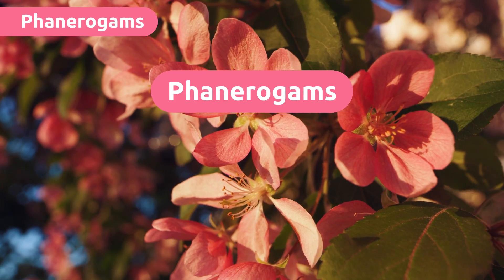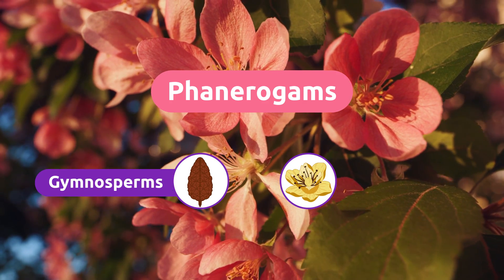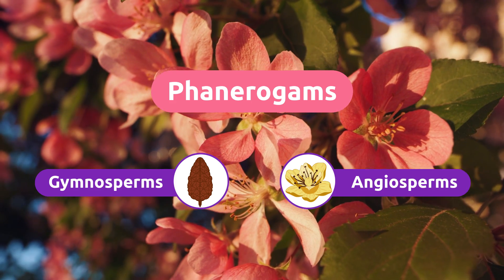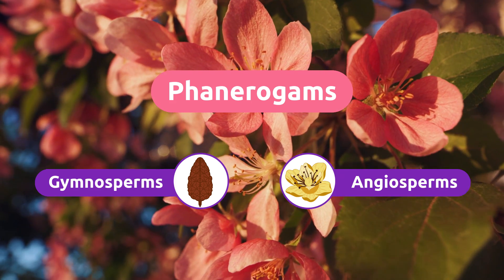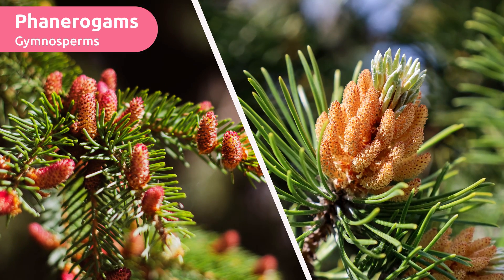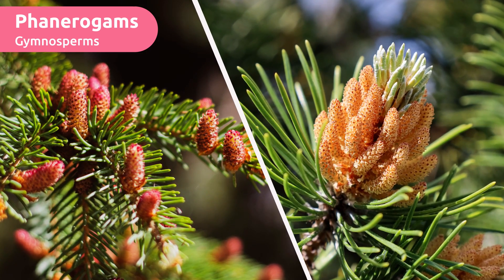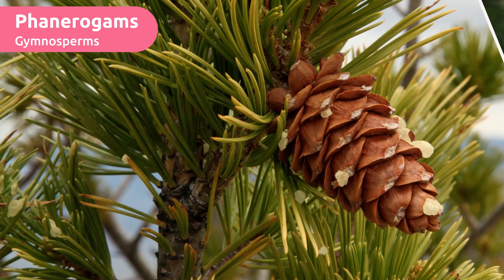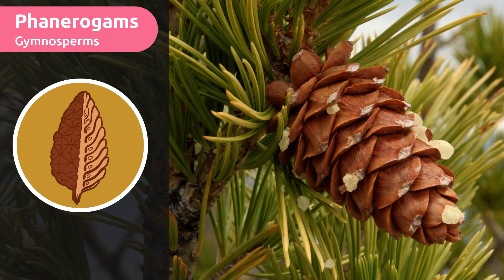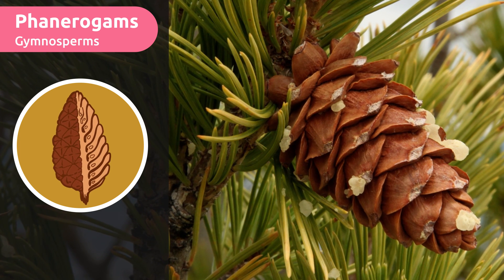There are two types of phanerogams: gymnosperms and angiosperms. Gymnosperm plants have rather unnoticeable flowers, like those of a fir or pine tree. The seeds are arranged on both sides of an axis, like this pine cone. Perhaps you've seen them in parks and forests.